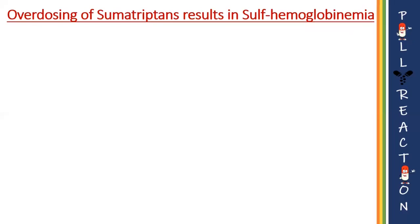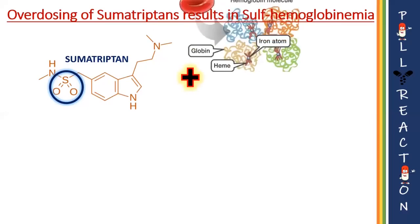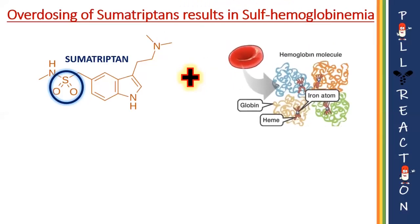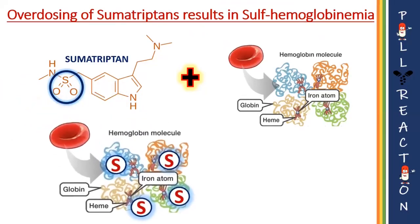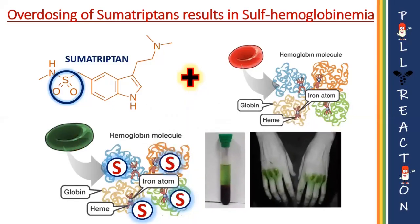Let us have a look at how overdosing of sumatriptan results in sulfhemoglobinemia. The chemical structure of sumatriptan contains a tryptamine nucleus and a sulfur atom. Overdosing leads to an interesting phenomenon where a hemoglobin molecule incorporates a sulfur atom into its structure and becomes sulfhemoglobin. We know that hemoglobin contains an iron atom to bind oxygen; in sulfhemoglobin, the sulfur atom prevents the iron from binding to oxygen. Since it is the oxygen-iron bonds that make our blood appear red, with sulfhemoglobin the blood appears dark blue or green.